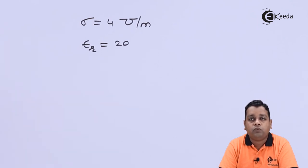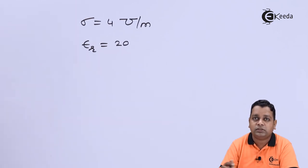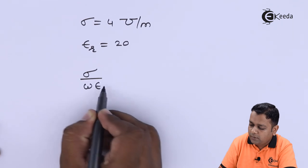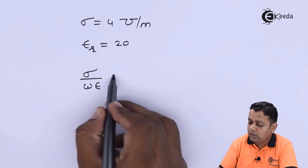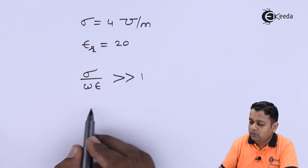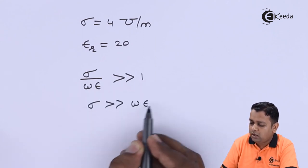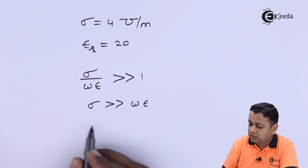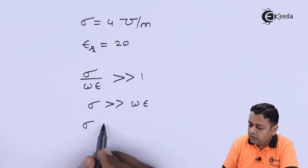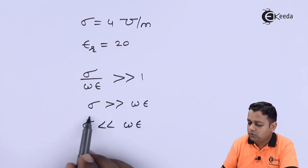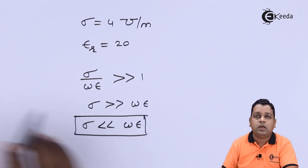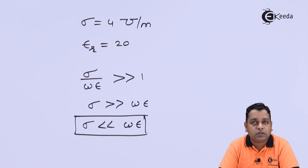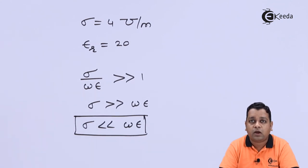Next, there are also poor dielectrics. Using the loss tangent ratio σ/(ωε): for good conductors we had σ >> ωε (ratio much greater than 1); for lossy or poor dielectrics the condition is σ << ωε. Applying these conditions to the basic electromagnetic field theory equations gives the corresponding modified values for the attenuation constant, phase shift constant, propagation constant, intrinsic impedance, and velocity of propagation.